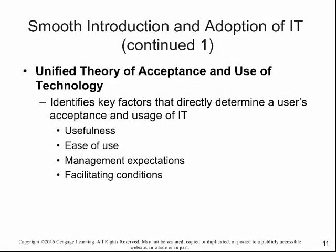The Unified Theory of Acceptance and Use of Technology — UTAUT is the acronym the textbook uses for this. It identifies key factors that directly determine the user's acceptance and usage of IT: usefulness, ease of use, management expectations, and facilitating conditions.